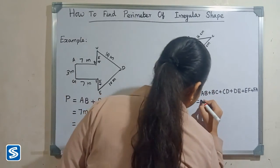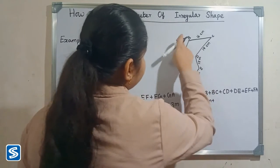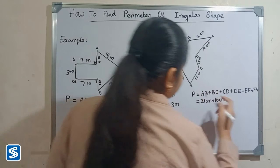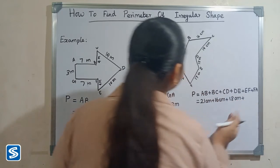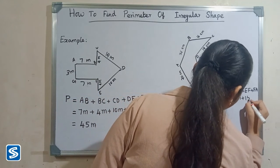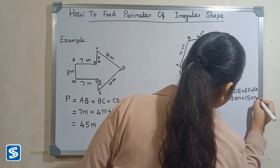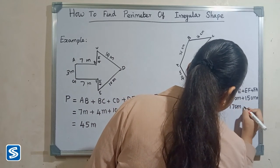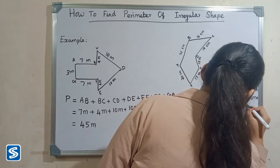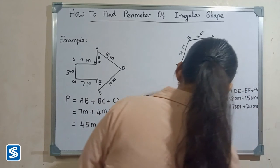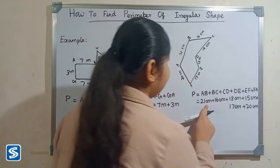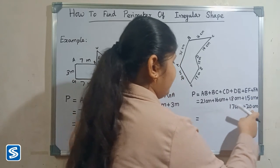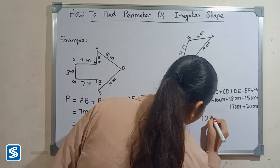Here AB is 21 centimeters, plus BC is 16 centimeters, plus CD is 18 centimeters, plus DE is 15 centimeters, plus EF is 17 centimeters, plus FA is 20 centimeters. So 21 plus 16 plus 18 plus 15 plus 17 plus 20 equals 107 centimeters.